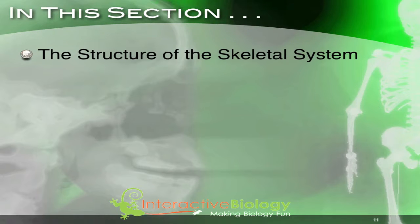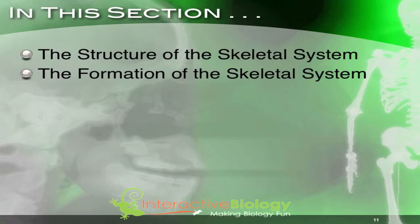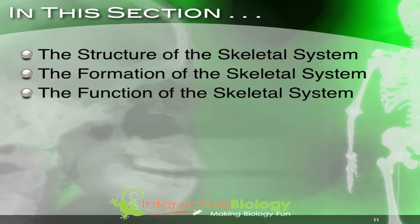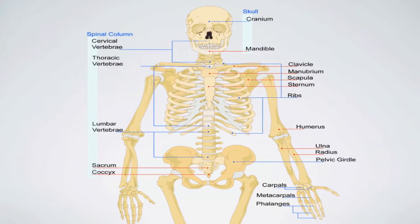We're going to first talk about the structure of the skeletal system — we've already started talking about it and we're going to go into more detail. Then we're going to talk about the formation of the skeletal system, how it's formed. We're also going to look at the function of the skeletal system, why we have it. And lastly, we're going to talk about what happens when we have bone injury and disease. Let's go into the closet and get Sherlock Bones.